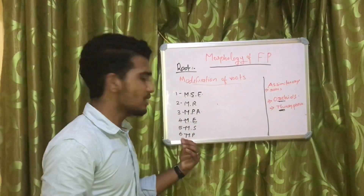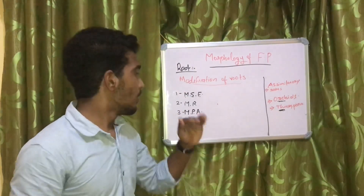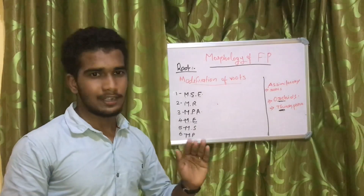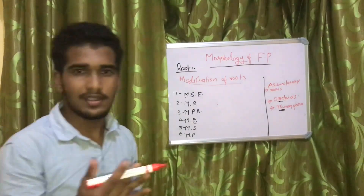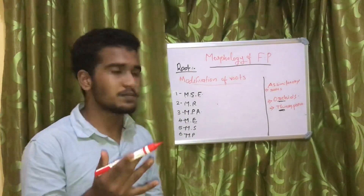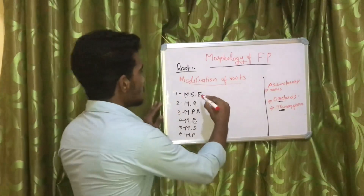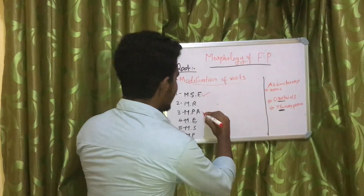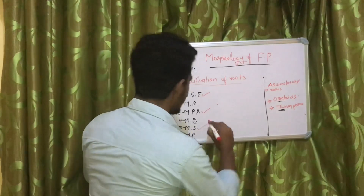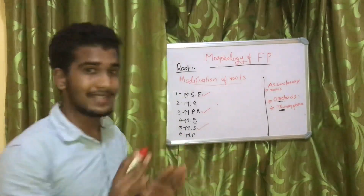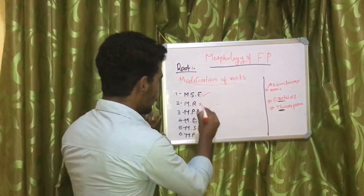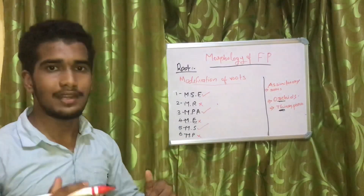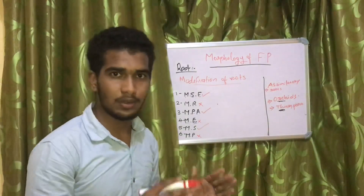There are 6 modifications of roots. Three modifications are from NCERT, and the other three are beyond NCERT — those are entrance-level topics. The three from NCERT are: modification for storage of food, parasitic adaptation, and modification for support.